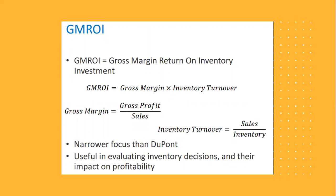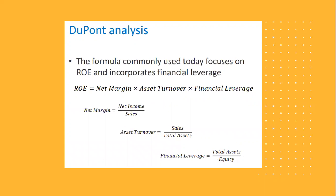Another very interesting ratio is the GMROI — the gross margin return on investment. This is also a combination of two ratios: gross margin multiplied by inventory turnover. Gross margin is gross profits divided by sales, and inventory turnover is sales divided by inventory. When you cross out sales from both, you're left with gross profit over inventory. This is basically used when evaluating inventory decisions and their impact on profitability. The DuPont formula commonly used today focuses on ROE.